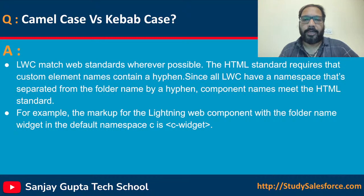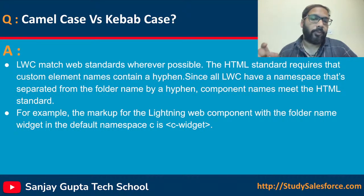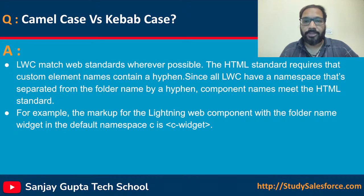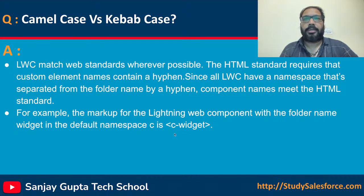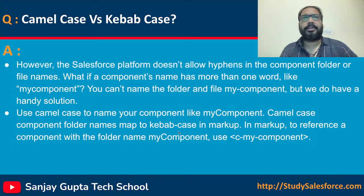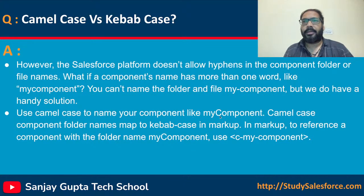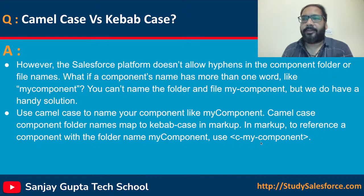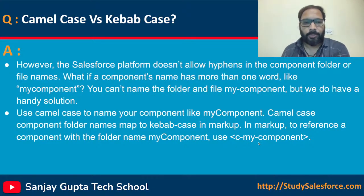This is also important: camel case versus kebab case. Whenever we create any component, we need to provide camel case naming convention. But when we want to use that component inside another component, we use kebab case. Here you can see it is written as 'c-widget' — this is kebab case, using a hyphen. For example, if you are creating a component named 'myComponent', that is camel case. And then we have 'c-my-component' — that is kebab case. This notation is supported by Lightning Web Component and is important to know for interviews.